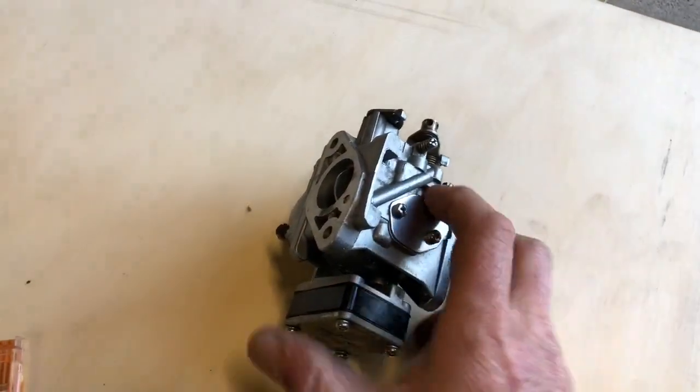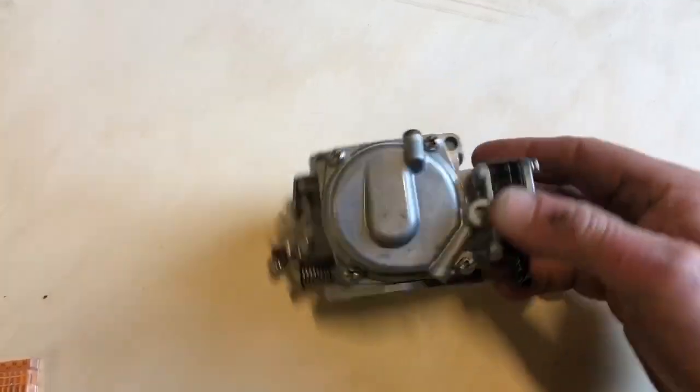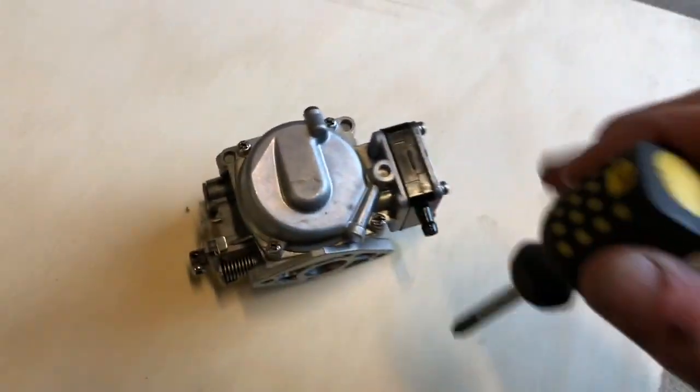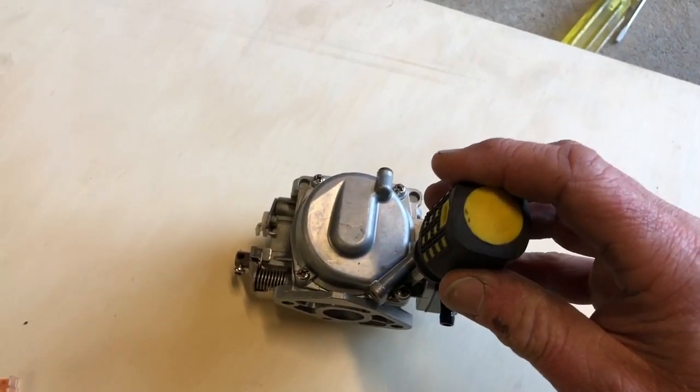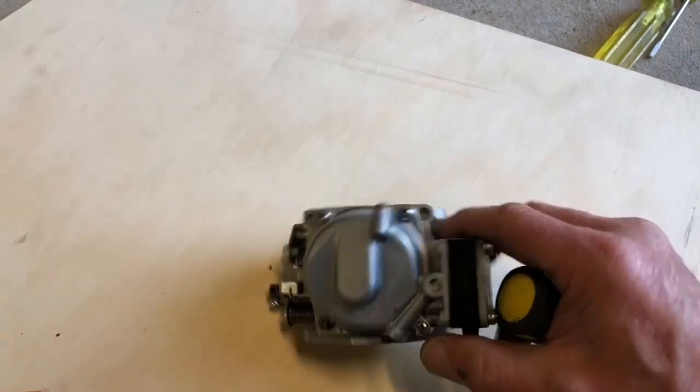You need to add more fuel. I'm going to run through how I enlarge the high-speed jets on a carburetor. First of all, we need to get to the high-speed jet, so I'm going to take this float bowl off this carburetor, which is four screws.